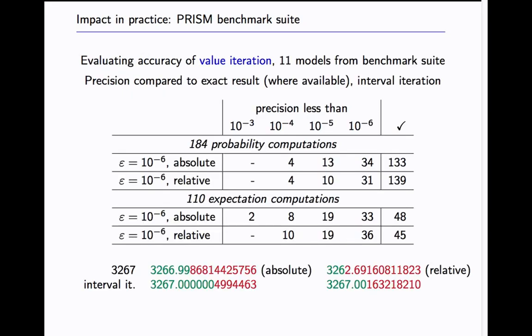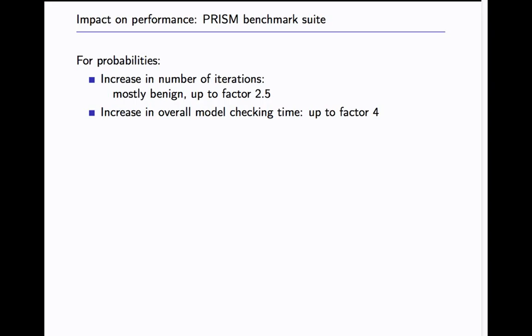This gives an indication why this termination check has been used. Because well there are some imprecision but it's not that catastrophic. However in independent work in our group we also stumbled upon a natural model that exhibited this catastrophic imprecision with value iteration. Then I want to give you a brief overview of the impact on performance because you do more work. You do the two iterations and you potentially do a lot more iterations because you have to achieve the more precise result.